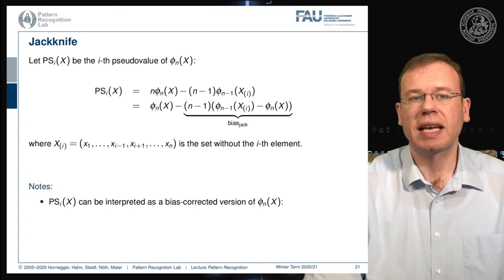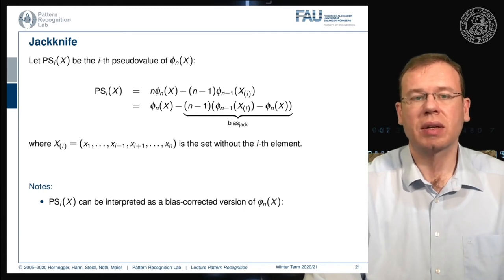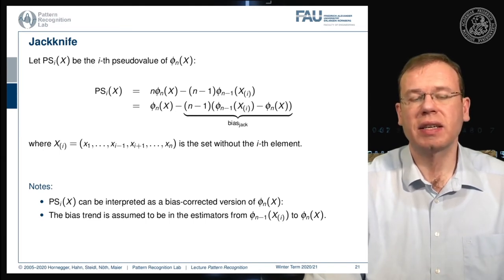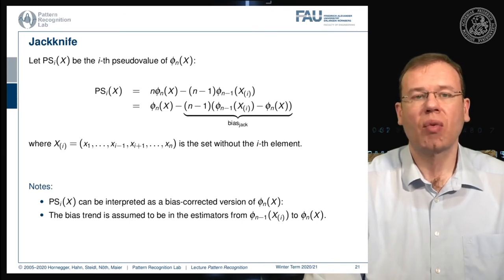You can essentially use this pseudo value to determine the performance of our estimator if the i-th value is missing. You estimate the bias between those two models and subtract it from the model estimated on the complete data. We assume that the bias trend can be estimated from the difference between estimators when we omit one of the samples in the estimation process.